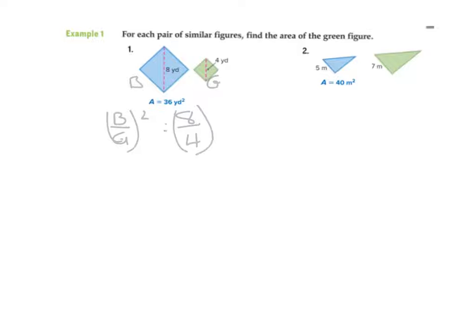Now we're doing our ratio and proportion. We know the area of the blue one is 36, so it's going to be 36 over G for green, equals 64 over 16. That's eight squared is 64, four squared is 16. Cross multiply, so 64G equals 16 times 36, which is 576. And so G is equal to 576 divided by 64, which will give you nine.